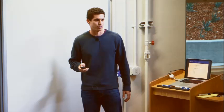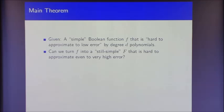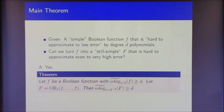That completes the first part of the talk. Now I'll get to hardness amplification for constant depth circuits. Suppose we're given a simple Boolean function f that is hard to approximate to low error by degree-d polynomials. Can we turn f into a still-simple function F that is hard to approximate even to high error? The answer is yes: let f be any function with one-sided approximate degree at least d, and consider the OR of t disjoint copies of f. Then the one-sided approximate degree of this combined function is also at least d, even if you allow error 1 - 2^{-t}. And if f was a constant depth circuit, then so is F.